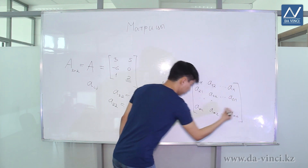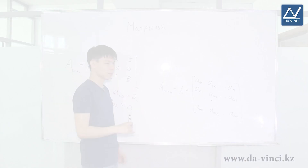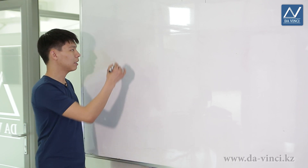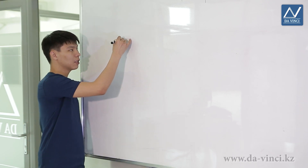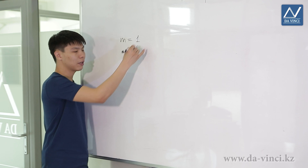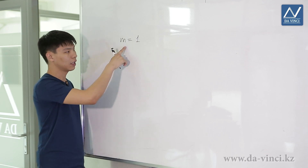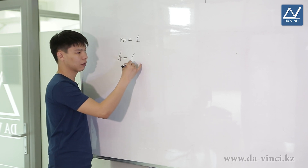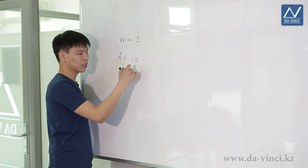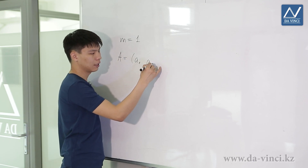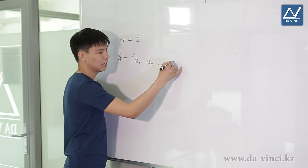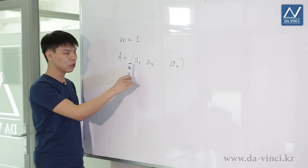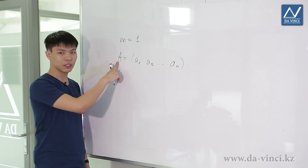This is how the matrix is generally denoted. Let's consider certain types of matrices. If there is only one row in the matrix — that is, M equals 1 — then the matrix will consist of only one row: A_{1}, A_{2}, and so on, A_{N}. This matrix is called a row vector.